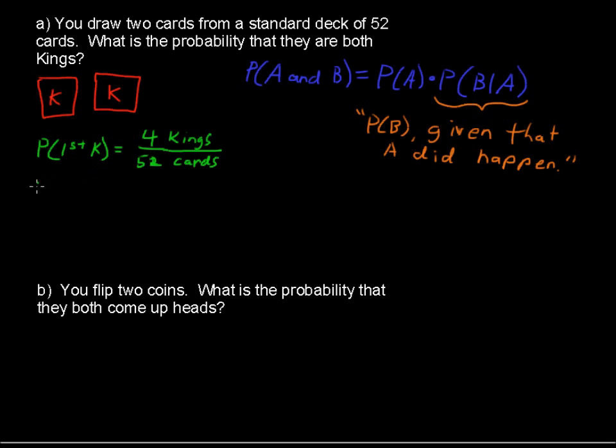The second one, this part here, what is the probability that the second card is a king, given that the first one was a king? So we're assuming that the first one was a king. We only have three kings left. If the first card was a king, we only have three kings left, and we only have 51 total cards left in the deck, because we didn't put it back.